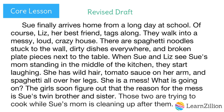Here is our revised draft. Sue finally arrives home after a long day at school. Of course, Liz, her best friend, tags along. They walk into a messy, loud, crazy house. There are spaghetti noodles stuck to the wall, dirty dishes everywhere, and broken plate pieces next to the table. When Sue and Liz see Sue's mom standing in the middle of the kitchen, they start laughing. She has wild hair, tomato sauce on her arm, and spaghetti all over her legs. She is a mess. What is going on? The girls soon figure out that the reason for the mess is Sue's twin brother and sister. Those two are trying to cook while Sue's mom is cleaning up after them. Including all the time transitions, we let the reader get a fuller picture of what is going on.